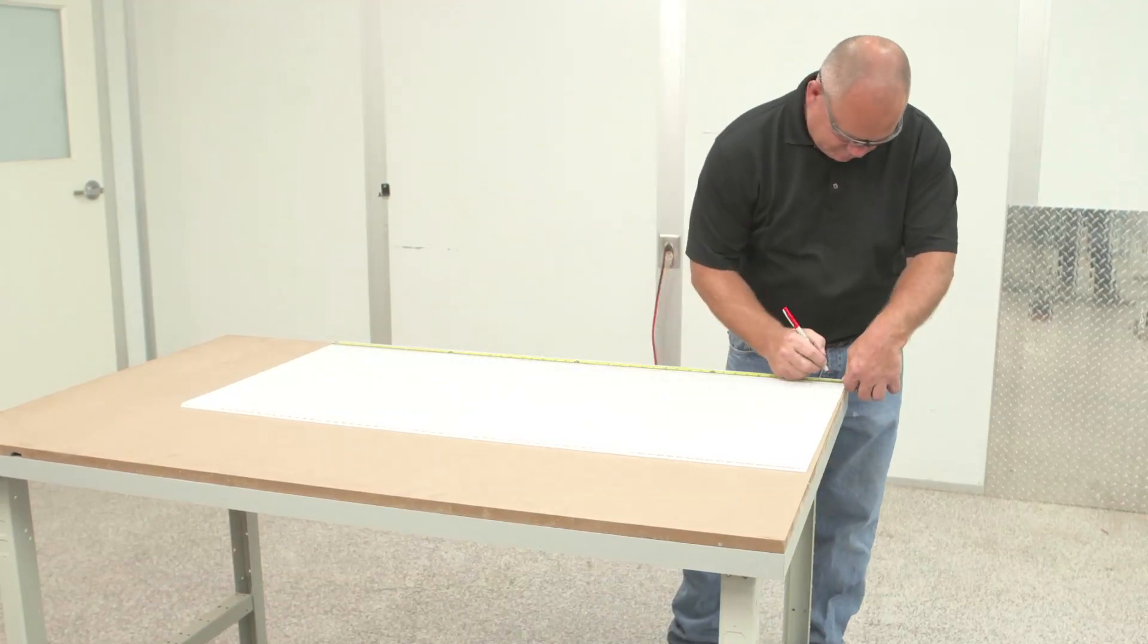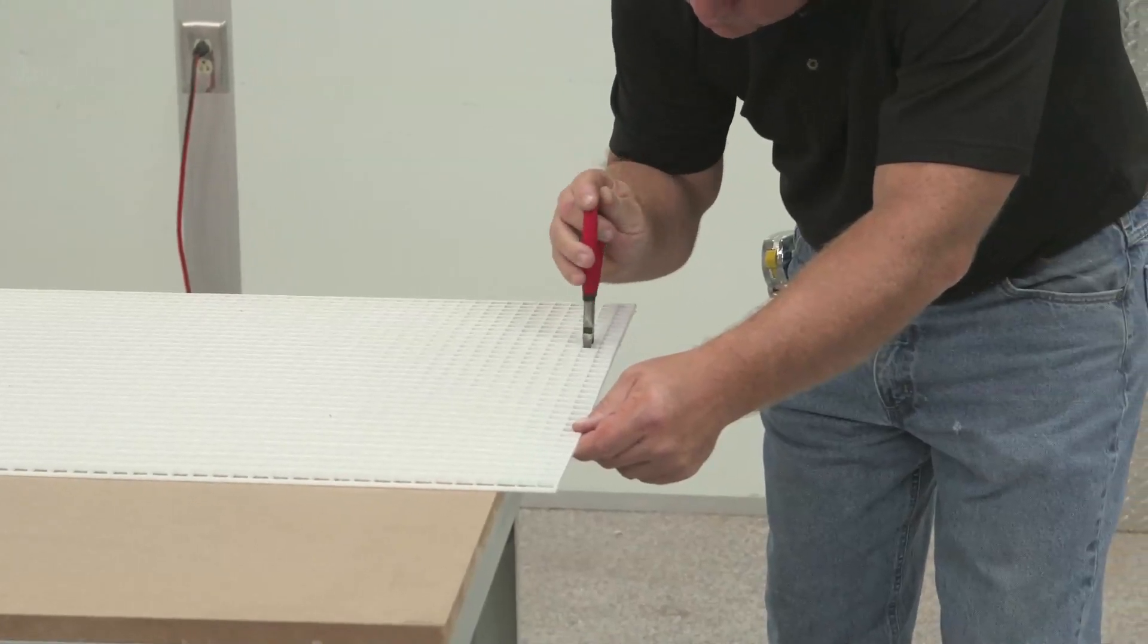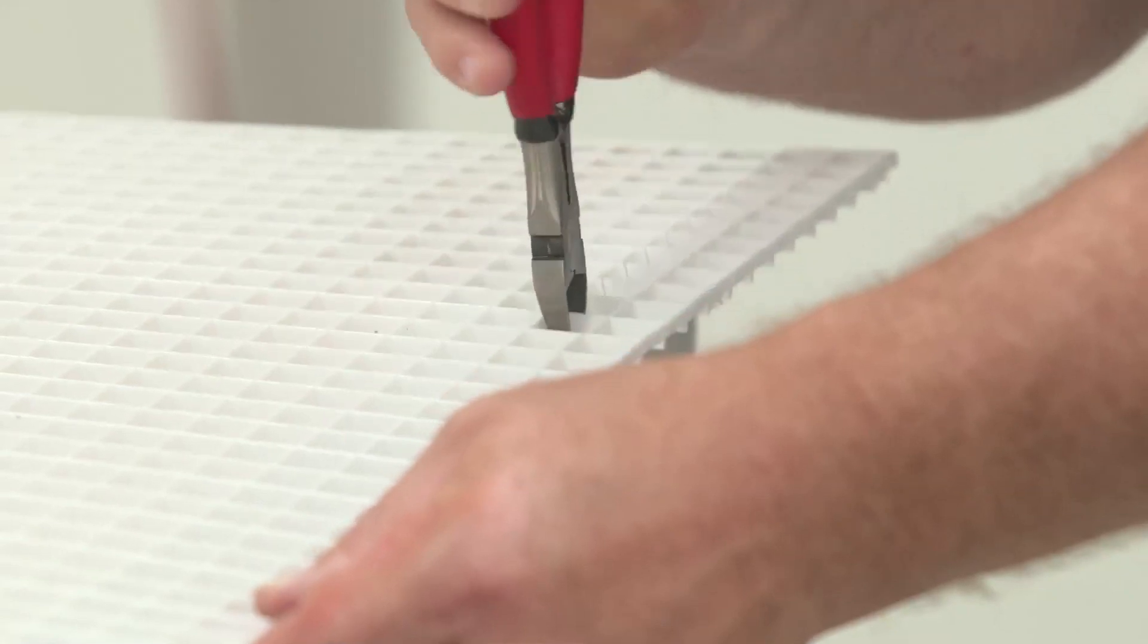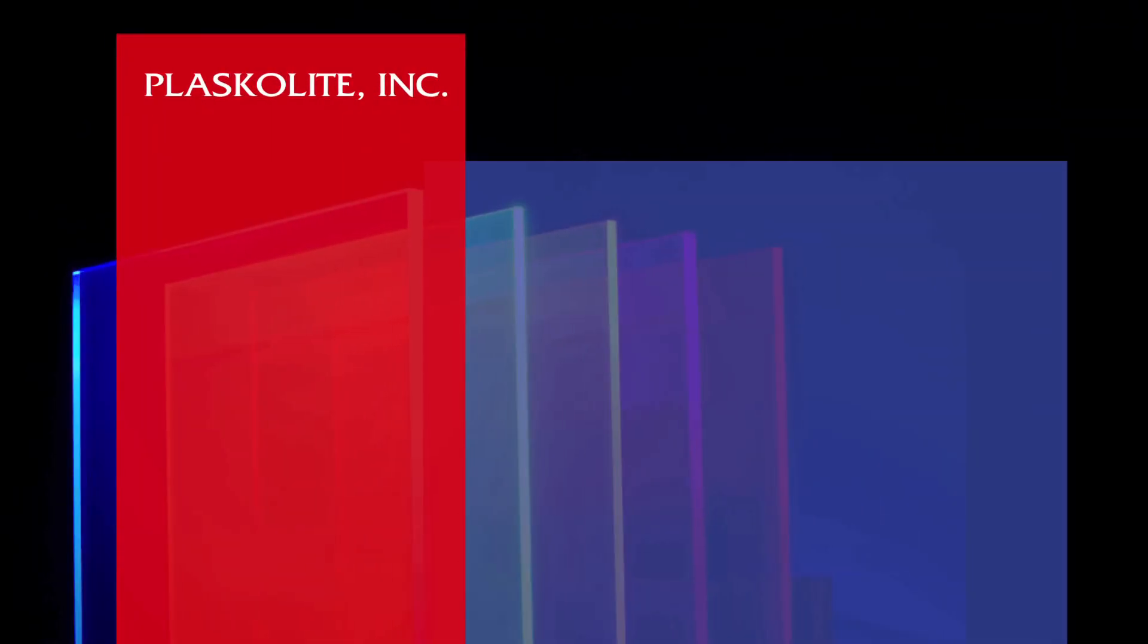For PlascoLite's metallic and white lighting louvers, measure then trim with diagonal cutters. Be sure to keep the cutting blades perpendicular to ensure a straight cut. For additional information, please visit PlascoLite.com.